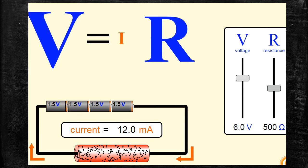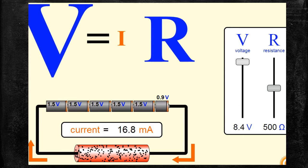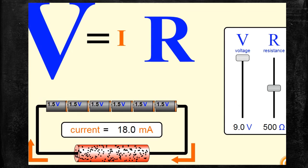Now I am going to increase the value of V further, from 6 volt to 9 volt. Look at the change in the current — when it is increased from 6 volt to 9 volt, the current also increases from the previous value to 18 milliampere. This shows that the current is directly proportional to V, that is, potential difference.